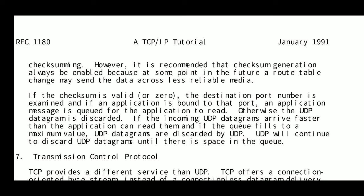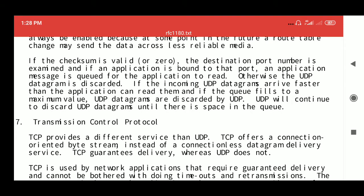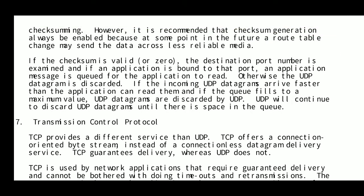If an application is bound to that port, the application message is queued for the application to read. Every message is queued before reading. If incoming UDP datagrams arrive faster than the application can read them, and the queue fills to a maximum value, UDP datagrams are discarded. UDP will continue to discard datagrams until space is available in the queue. This is how UDP controls flow using queues.